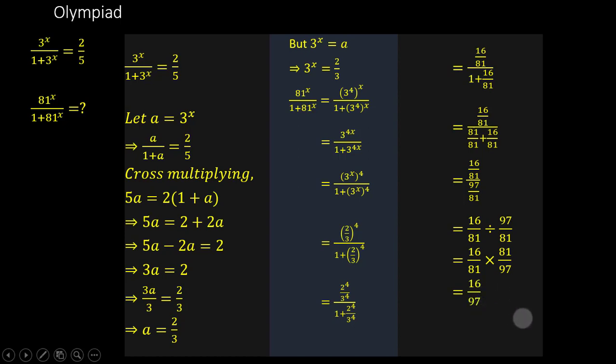We can therefore say that 81 to the power x over 1 plus 81 to the power x is equal to 16 over 97. I hope this was quite comprehensive. Thank you for your time. Make sure you click on the subscribe button, like and share. Goodbye.